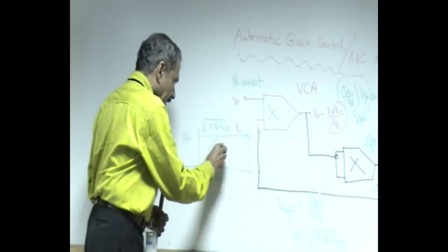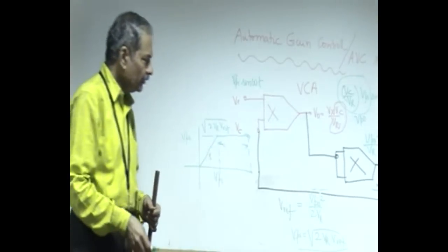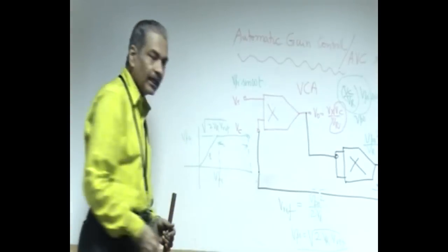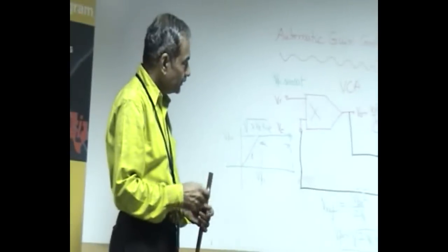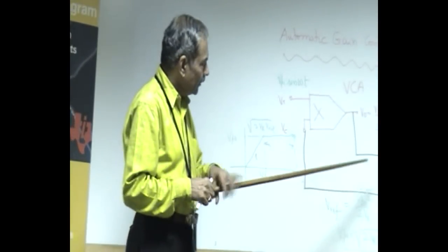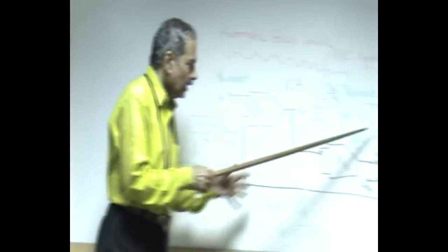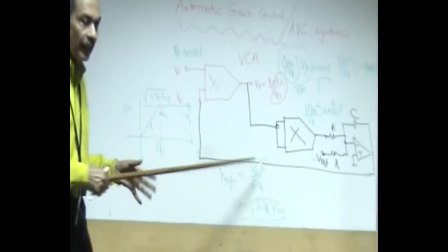This is the dynamic range within which AGC is effective, or this is the lock range. You can say that this is the lock range in which this particular AGC loop is getting locked to this particular amplitude.